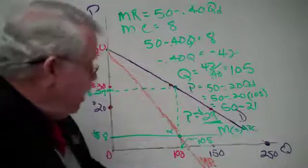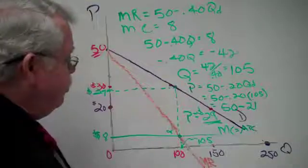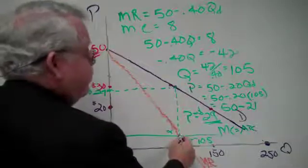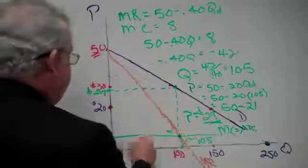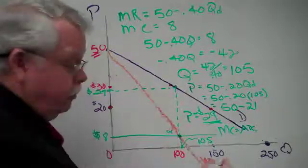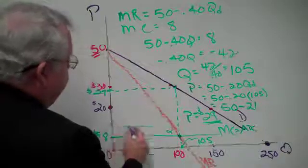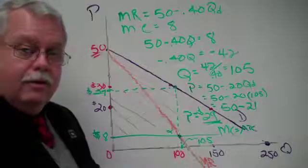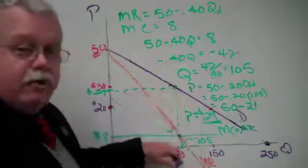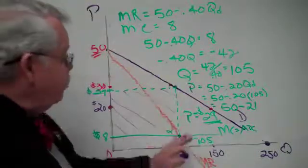Now just as a quick aside, you might want to remember too that the difference between average cost and price is their profit per unit times this many units. If it helps to see graphically, this is their profit. It's the difference between price and average cost multiplied times the number of units they produce.